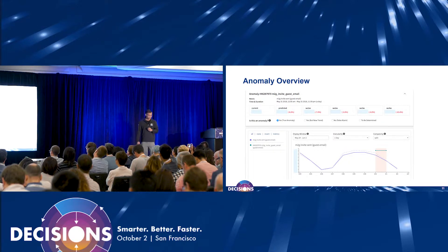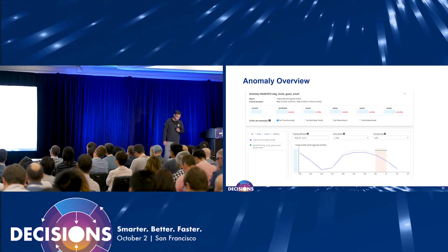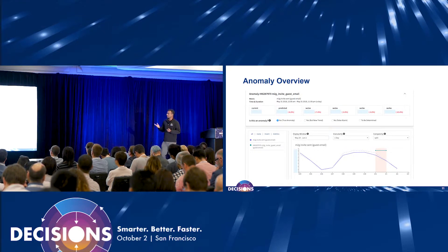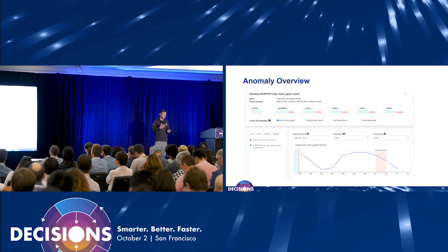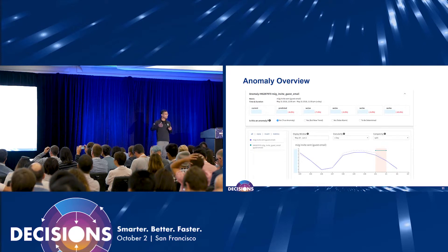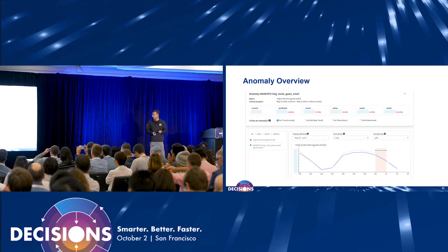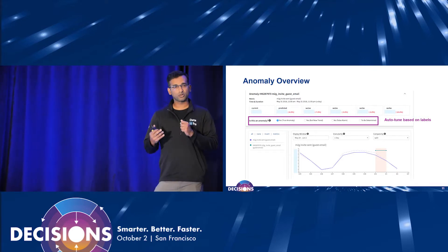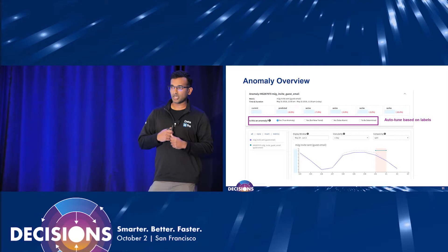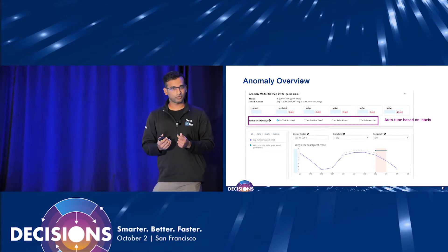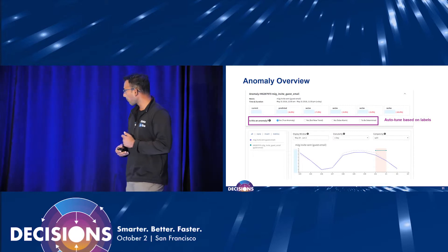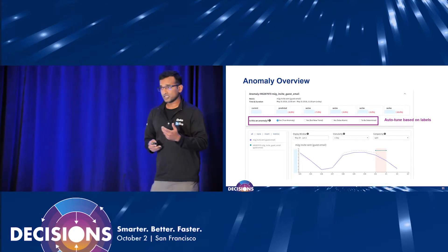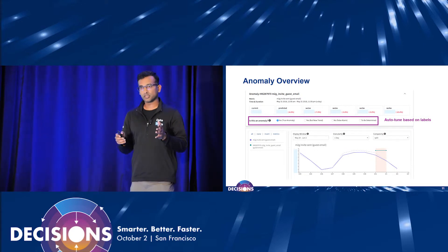If you look at the anomaly overview page — we've hidden some actual numbers here — this metric, which is 'invite guest email sent,' is dropping week over week for the last four weeks continuously. Looking at the last four weeks as the baseline, it's dropping all the time. So you decide whether it's an anomaly or not — this is where we get feedback from the user. You say yes it's an anomaly, or no. Or you can say 'I launched this awesome feature now and we're on a new trend,' marking it as an anomaly at that point but a new trend from there on. Once you say it's a new trend, the algorithm starts to forget what it has learned so far and begins learning again.